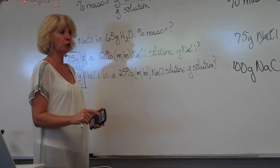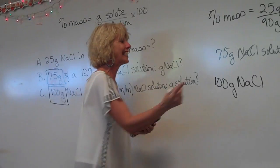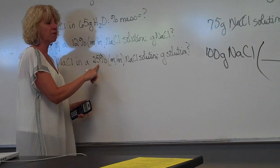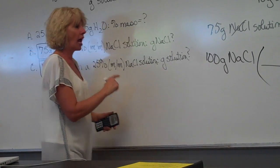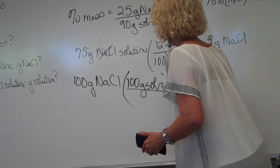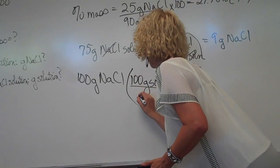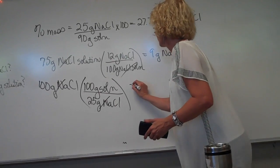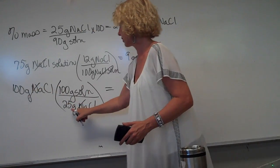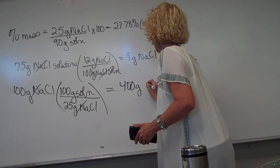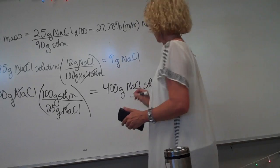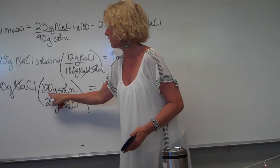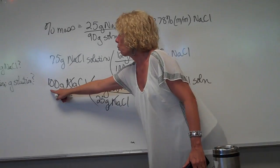I have a 25% solution and I want to find out how many grams of solution are needed to contain 100 grams of salt. A 25% mass-mass solution means I have 100 grams of solution containing 25 grams of salt. The salt cancels out. 100 divided by 25 is 4, times 100 is 400 grams of the salt solution. This means I need 400 grams of total solution at 25% in order to contain 100 grams of salt.